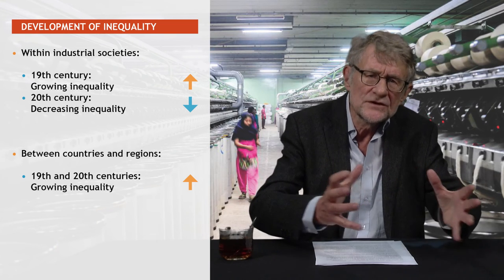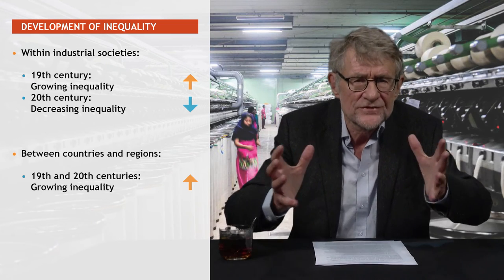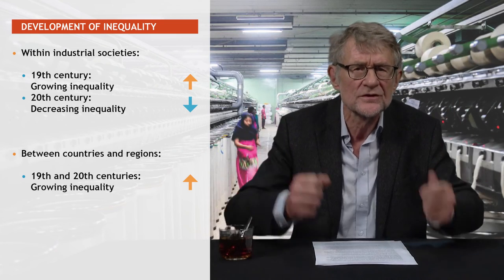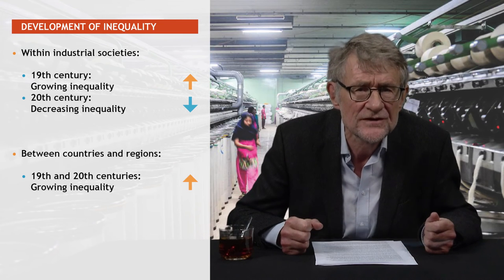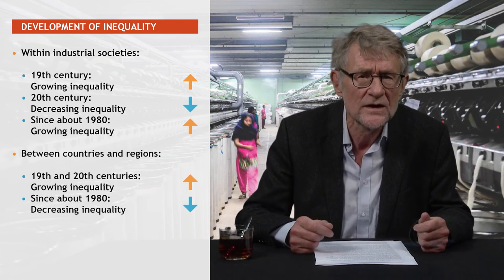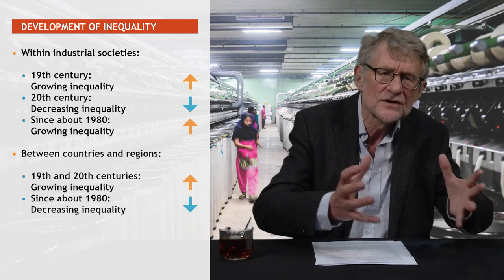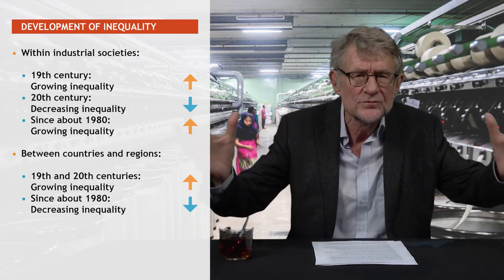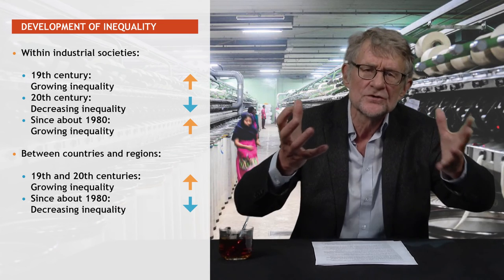So there were two inequality trends in the 20th century: a decrease of income and wealth inequalities within rich countries, and an increase of inequality between the rich and the poor countries. But since about 1980, we see a reversal of both these trends. Inequality within the rich countries, and in many poorer countries as well, tends to increase again. On the other hand, economic growth in poorer countries is on average higher than in the rich countries, so that overall inequality between countries is somewhat narrowing, and more people in the world are lifted out of utmost poverty.